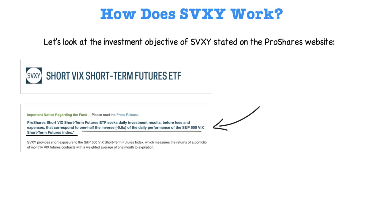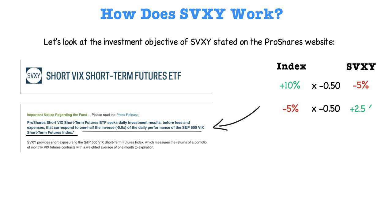SVXY tracks one-half the inverse of the daily percentage change of the S&P 500 VIX Short-Term Futures Index. For example, if the S&P 500 VIX Short-Term Futures Index increases by 10% in one day, SVXY will decrease by 5%. If that VIX Short-Term Futures Index decreases by 5% in one day, SVXY will increase by two-and-a-half percentage points. The next piece is understanding what the S&P 500 VIX Short-Term Futures Index is actually representing.